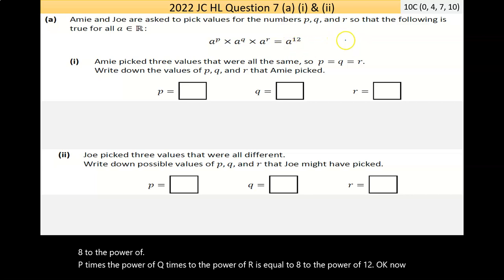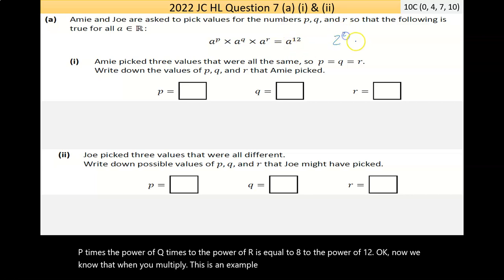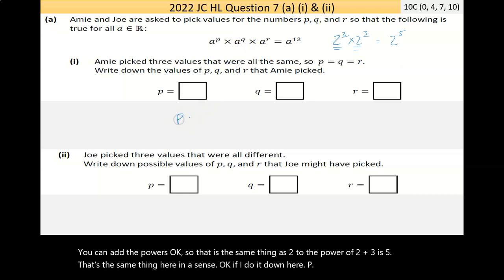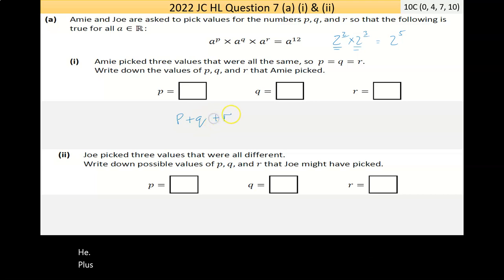Now we know that when you multiply, let's just use an example, let's say 2 squared times 2 to the power of 3. When you have the same base number, you can add the powers. So that is the same thing as 2 to the power of 2 plus 3 is 5. Now that's the same thing here. P plus Q plus R must equal 12. Because if you're multiplying the same base numbers, you're going to add these little numbers. P plus Q plus R equals 12. And that's the trick.